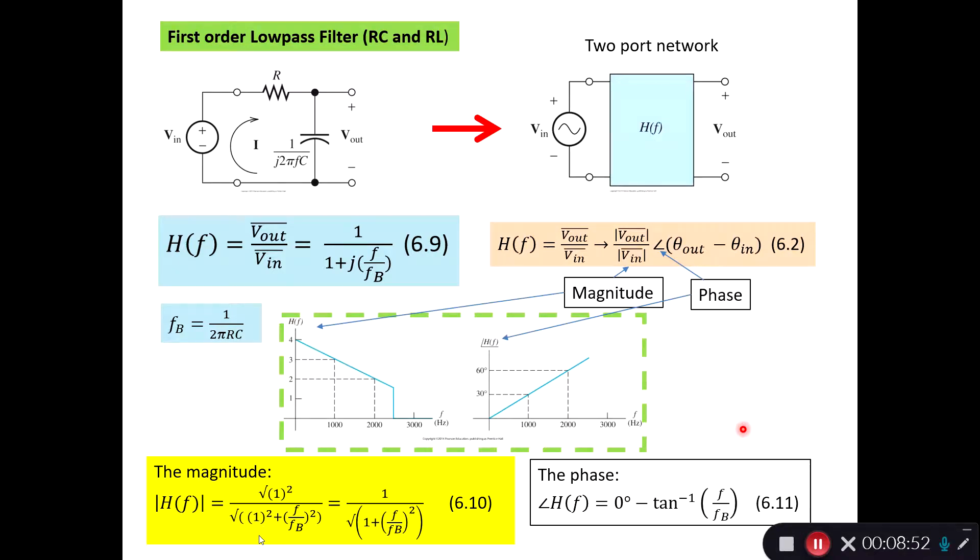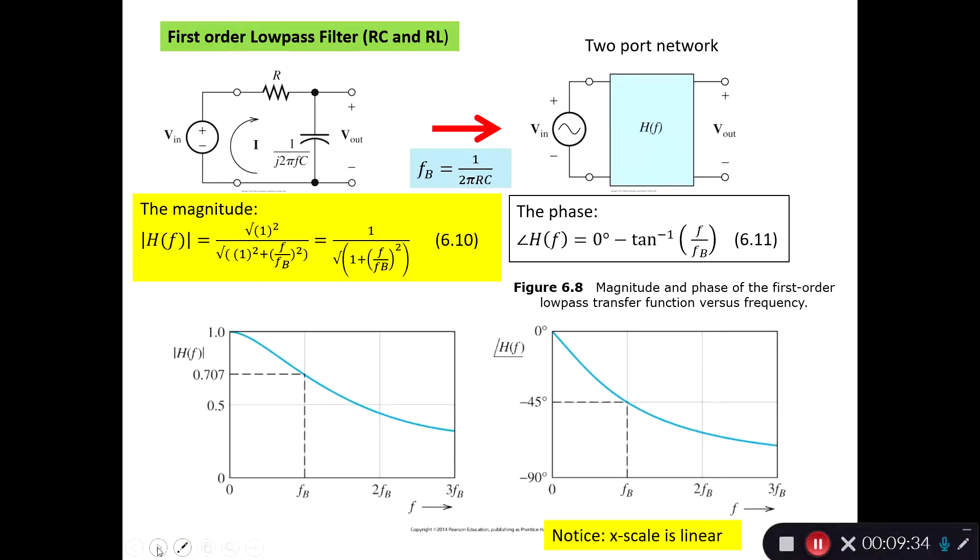For the phase, we know that it is 1 divided by what we have down here. So 1 is a phase shift of 0 minus the tangent of the imaginary part, F over FB. That would be the phase of it. In some books, you will see that this 0 isn't even written, it's just written as minus tangent. That's due to that we have a 1 up here, it has no phase shift. Now we have the low-pass filter made into description of the two-port network with the magnitude and the phase.